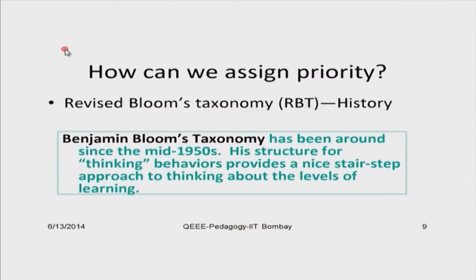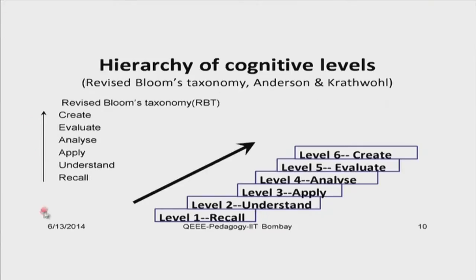Is there any theory to decide a hierarchy or priority of learning objectives? Yes — it is given by Revised Bloom's Taxonomy. This psychologist gave a structure of thinking behavior, and we refer to it as Revised Bloom's Taxonomy. It starts from recall and slowly increases in thinking level, finally reaching 'create' — that is open, design-level problem solving. Today's class will see how to write learning objectives for all six levels.